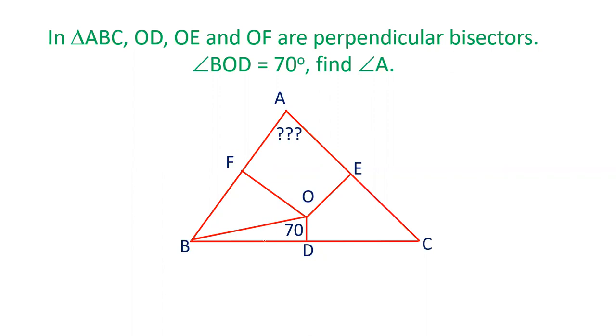In this video, we will see an interesting question. Given here is our triangle ABC. OD, OE, and OF are perpendicular bisectors. That means this side is equal to this side, and this angle is 90 degrees.